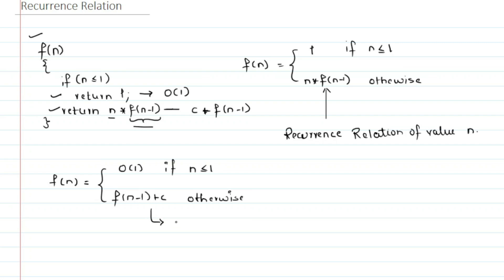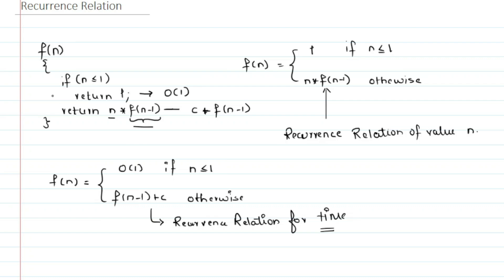So this is the recurrence relation for the time taken by this code. In this way, we find the recurrence relation for time taken by the code. Now let's find the recurrence relation for time taken by finding the nth Fibonacci number.